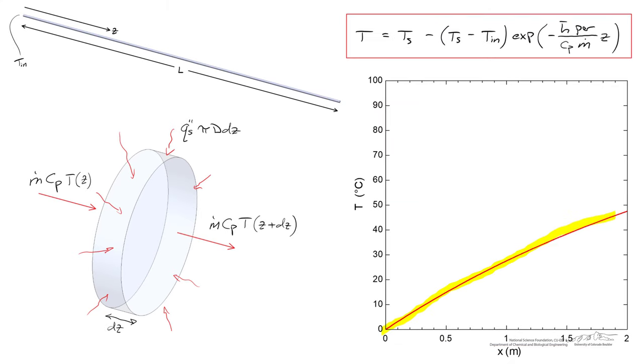This is a graph of that equation for the parameters that I've selected for this problem. We see the temperature increases from zero degrees C at the entrance up to close to 50 degrees C by the time we've reached the length of two meters.